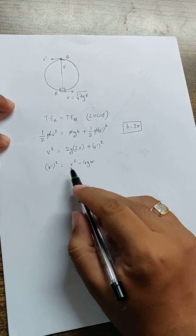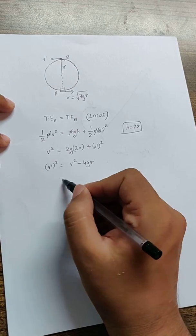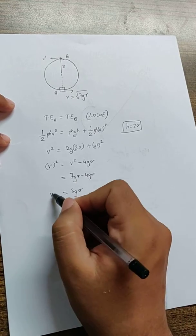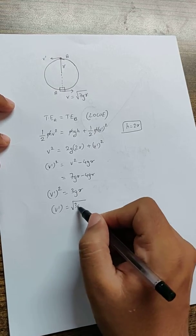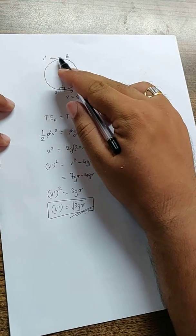Now if you remember V was root 7gr, squaring and substituting it over here, we get 7gr minus 4gr as 3gr, which is V dash square. So V dash is nothing but root 3gr. That is the velocity we found over here.